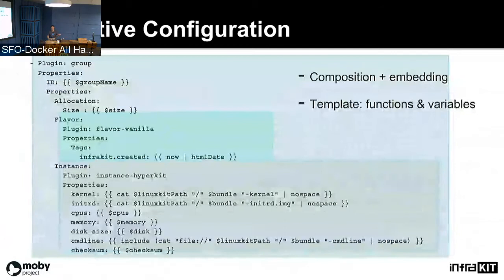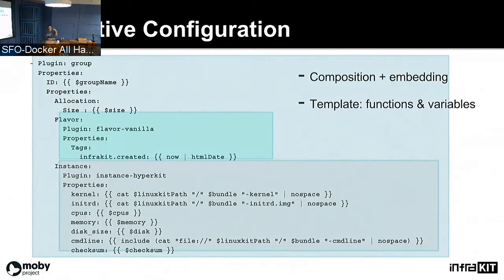Here's an example of a declarative configuration. It looks like YAML — you can also compose it in JSON — but in reality it's a bit like Helm charts in that it's a YAML file that supports template expressions. This allows you to define variables and use various functions so the system renders the actual configuration before sending it off to the rest of the controllers.